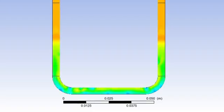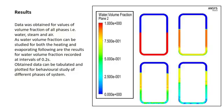Using CAE software, we obtained result in the form of values of volume fraction of different phases of the system, that is liquid water, steam and air. As demonstrated, the water volume fraction for heating and evaporating, following are the results recorded at intervals of 0.2 seconds. The obtained data can also be tabulated and plotted for behavioral study of different factors and properties of the system.